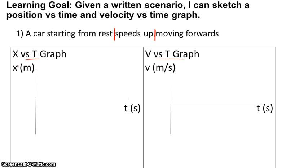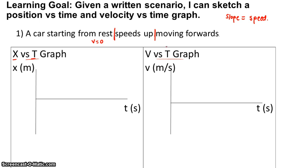In class we learned that if I have a position versus time graph, my slope is equal to the speed. So if a car is starting from rest, its speed is zero — when it's at rest, its speed is zero. So if its speed is zero, its slope must also be zero at that point.